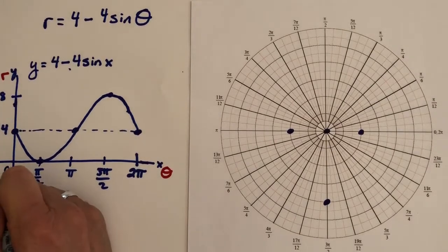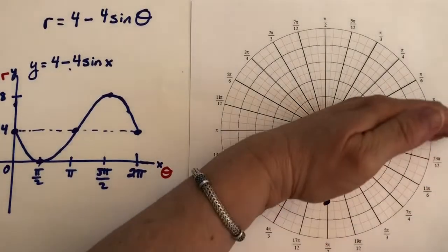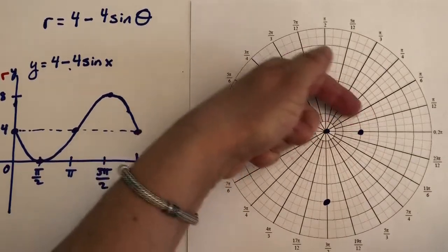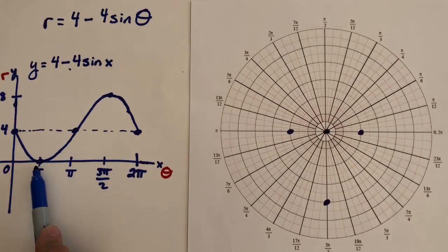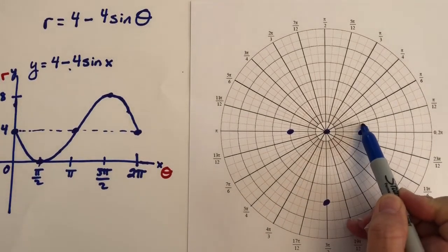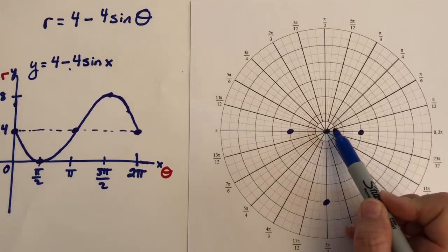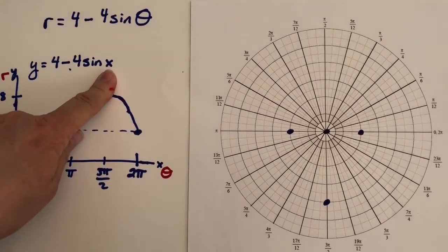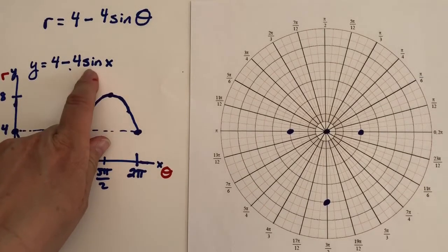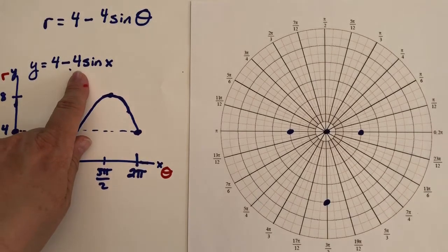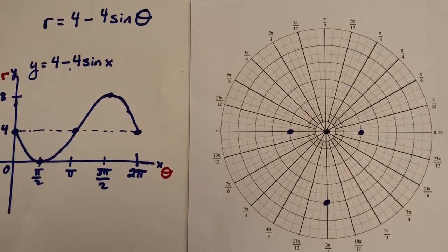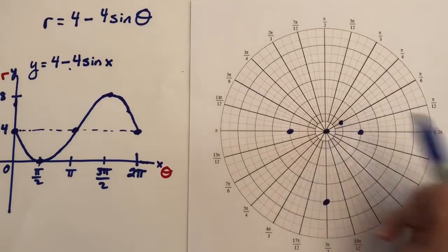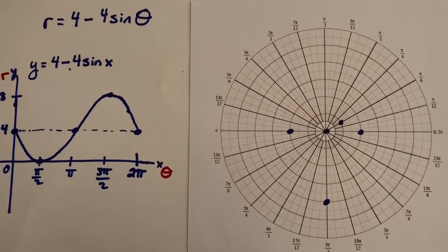Between 0 and π over 2, the r values are positive and getting smaller until they reach 0. So I know we're out at 4, but it's going to come around and get closer and closer to 0. If you'd like a more precise graph, plug in a familiar value like π over 6, which gives r = 2, providing another helpful point.